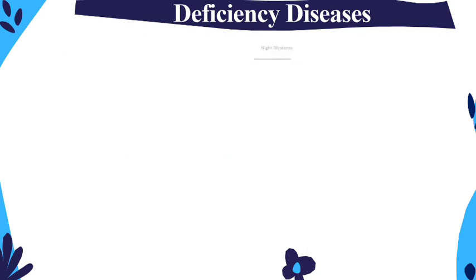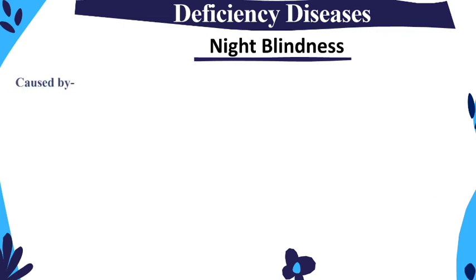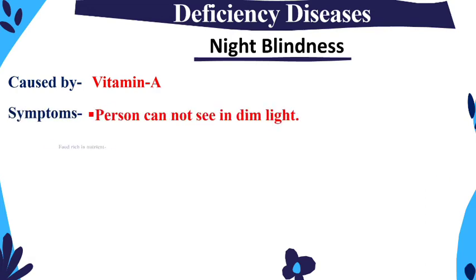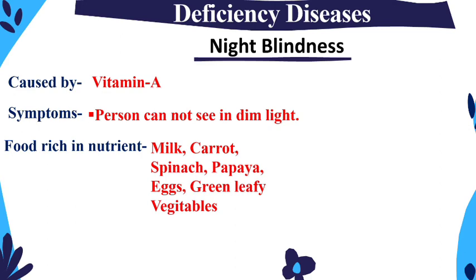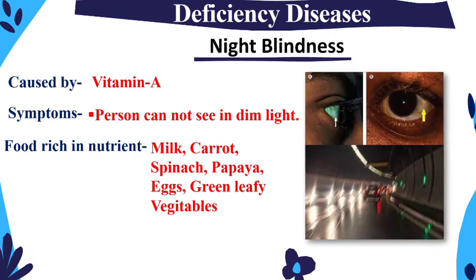The next disease is Night Blindness, caused by Vitamin A deficiency. A person with night blindness cannot see properly in dim light. Foods to consume include milk, carrot, spinach, papaya, eggs, and green leafy vegetables. Here you can see a blurred image representing how a person affected by this disease sees in low light.